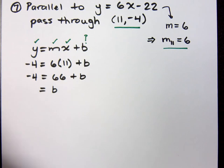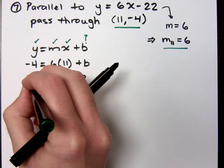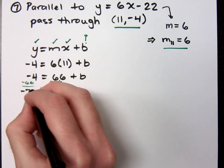Now, remember, guys, you're subtracting 66 on both sides, so that gives you a negative 70.